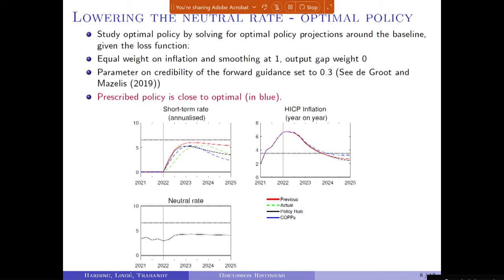I also checked what if the central bank was following optimal policy. I set up a simple loss function with equal weights on inflation and smoothing at one and the output gap weight at zero. Because this model solves with expected shocks, I set the credibility of forward guidance to 0.3, so that forward guidance is dampened in a reasonable way and we don't have a forward guidance puzzle. The blue line shows the optimal policy response, which is quite close to the baseline response and goes to a lower level later on, avoiding the undershooting in inflation at the end of the period. This is not too far off from the actual rate, though we have to keep in mind this is only done with the linearized model.